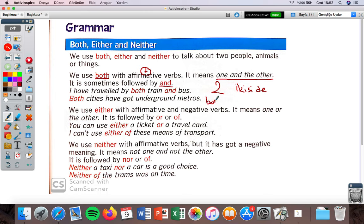It's sometimes followed by 'and', so it's like this: both blah blah blah and blah blah blah. Both you and your sister. Let's look at the example: I have traveled by both train and bus. So there are two options, train and bus, and I used both of them. I traveled by both train and bus.